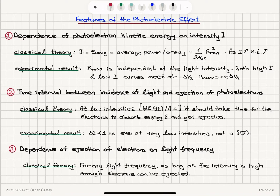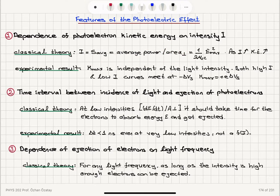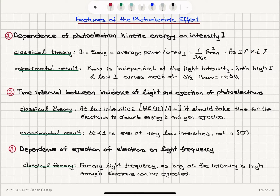Let's analyze this effect. There are important features of the photoelectric effect we have to explain. The first is the dependence of photoelectron kinetic energy on intensity. If we increase the intensity, classical theory says intensity is the average power per perpendicular area — the average value of the Poynting vector magnitude, 1 over 2μ₀c times Emax squared. So as we increase intensity, since more power hits the unit area, we should expect the kinetic energy of the electrons to increase.